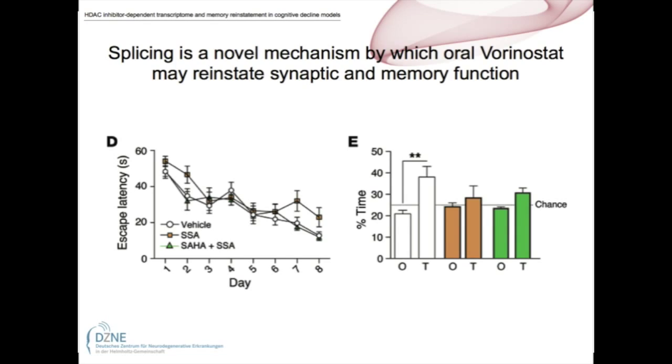We went and looked at splicing in more detail and found that aging is associated with a very massive deregulation of splicing, which is brought to complete normality after treatment with SAHA. This is a very new concept and a very new finding, associating for the first time HDAC inhibitors and splicing — this being true at least for the brain and at the genome-wide level.